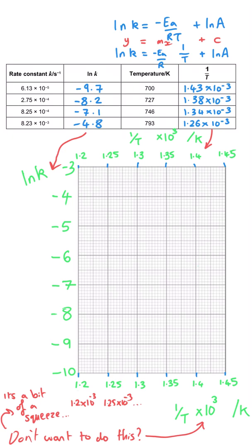Once the scale and axes are set, plotting the points is straightforward. After plotting, draw the best line of best fit — it should be a very clear straight line going diagonally from top left to bottom right. The gradient is always negative because it equals negative activation energy over R, and since activation energy is always positive, the gradient must always be negative. This gives two marks: one for accurately plotting all points and one for the correct line of best fit.